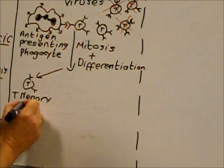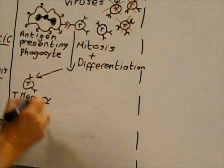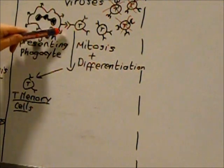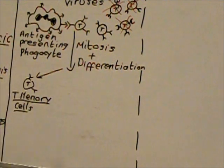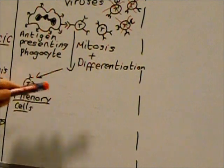One type of T lymphocyte produced is T memory cells. These are really important for immunity because they remain in your blood after the infection, and if they encounter that same antigen again, they will rapidly undergo mitosis to produce a whole clone of identical T cells, including the differentiated cell types.